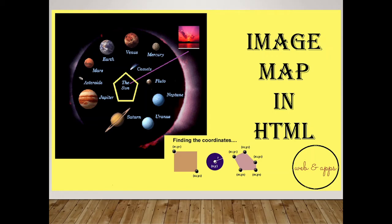Welcome back to my channel Webinacs with Edith. Today the video is all about image map in HTML — mapping from one image to multiples of images or multiple HTML files. The explanation for prerequisites is already done in my previous video. If you have not watched it, the link will be in my description box and as a card popping up on the right-hand side.